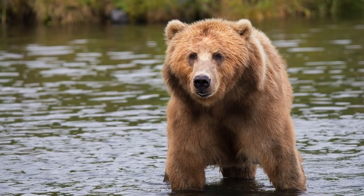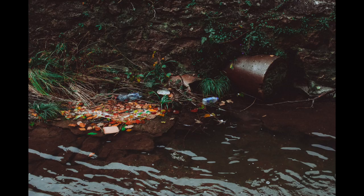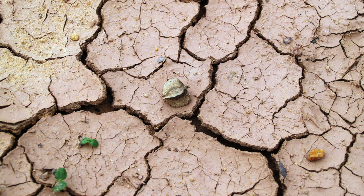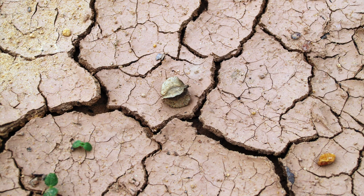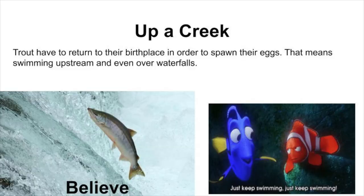Trout must also evade predators, such as bears, otters, larger fish, and humans. Additionally, trout must overcome human impacts on their habitat, such as pollution. Weather patterns can also affect the trout's journey upstream. For example, extreme droughts can leave water levels too low to spawn, and high waters from high snowfall or rain can decrease fertilization rates. For these reasons, only about 5-10% of rainbow trout will make it through the early stages of life and the journey upstream to spawn.